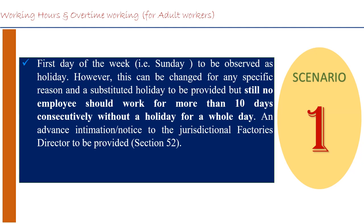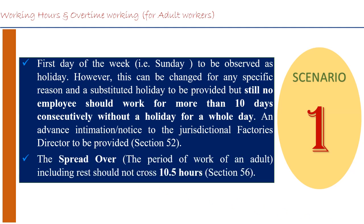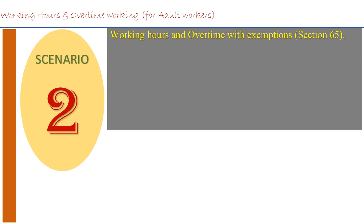This provision is available in Section 52. Also, the spread over — which includes the break time and the working hours — the period of work of an adult should not cross 10.5 hours, as per Section 56. Now let's understand Scenario 2, where overtime can be obtained from workers with exemptions from the Department of Factories and Boilers under the provisions of Section 65 of the Factories Act 1948.